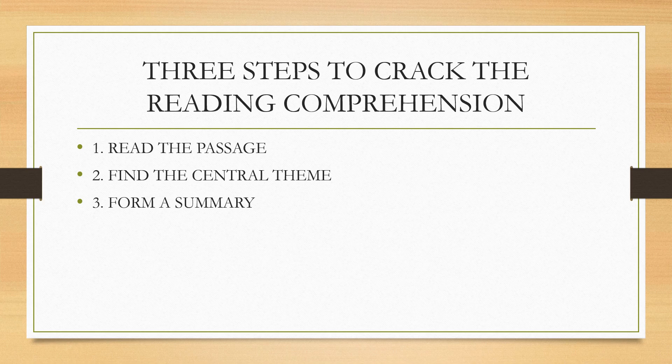For example, as given in the first video: if a passage says public officials have been eating a lot of money or siphoning away funds, the central theme you can gauge from reading the entire paragraph is that it is talking about something related to corruption. So while reading the passage, develop in your mind what the author is trying to communicate as the central theme.